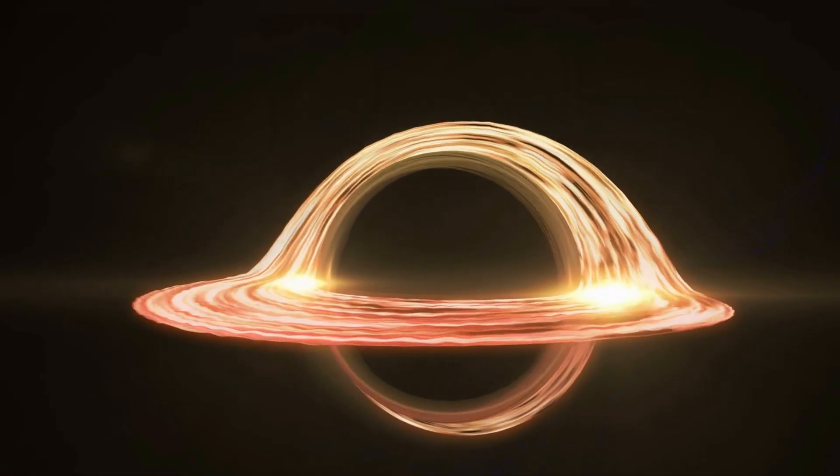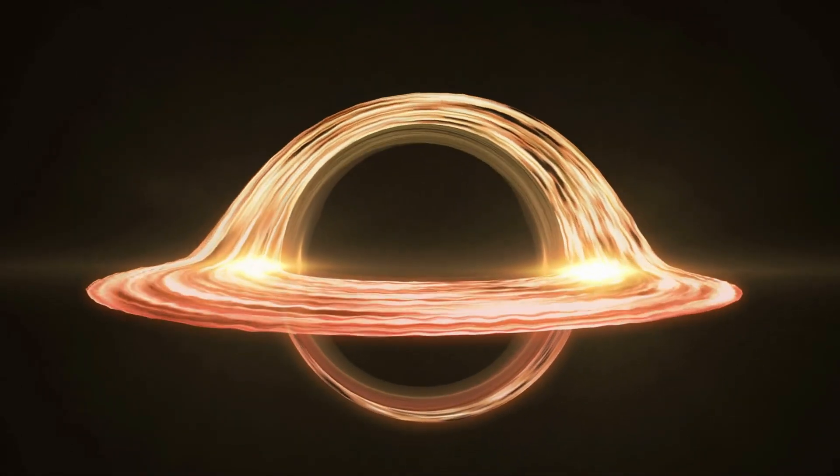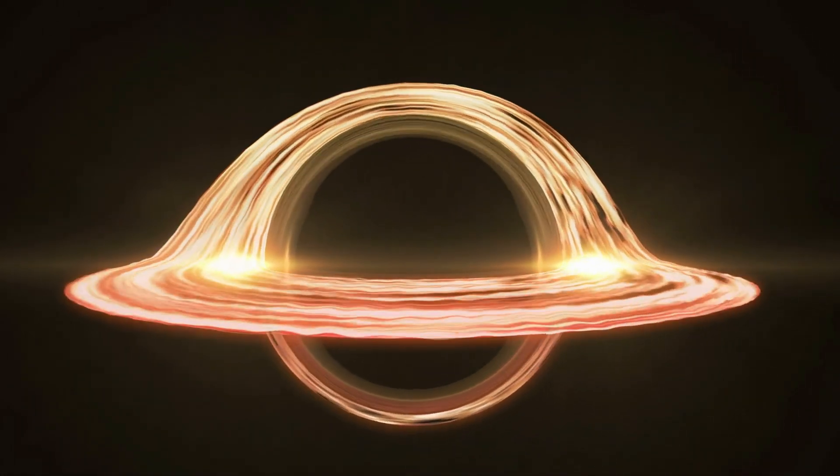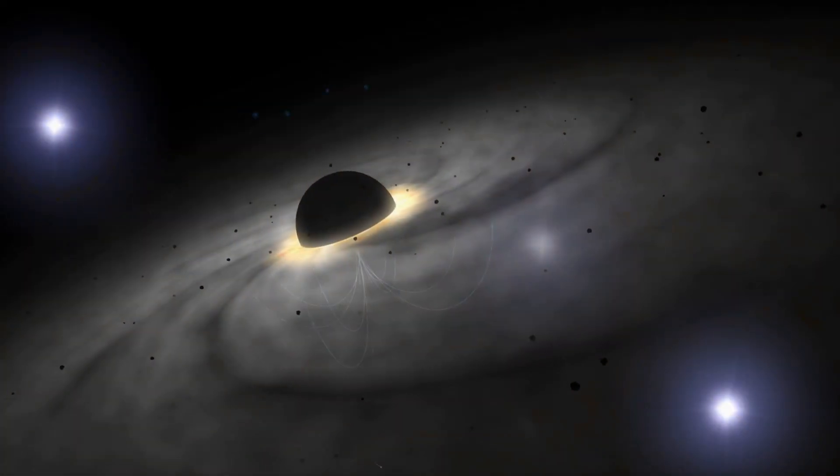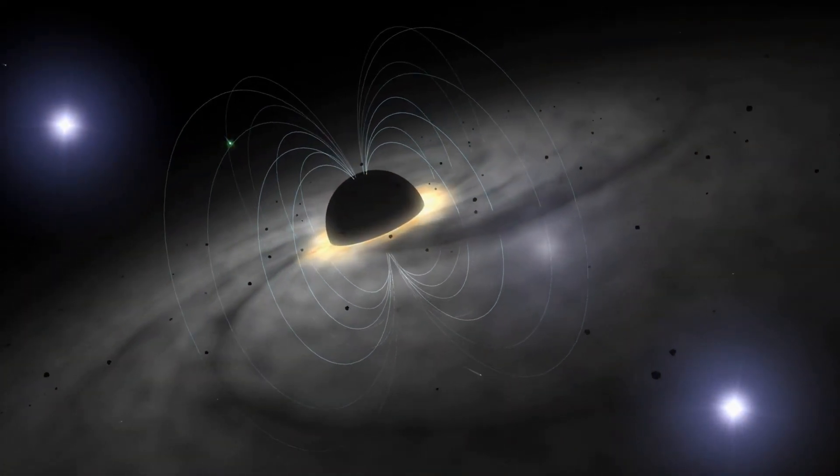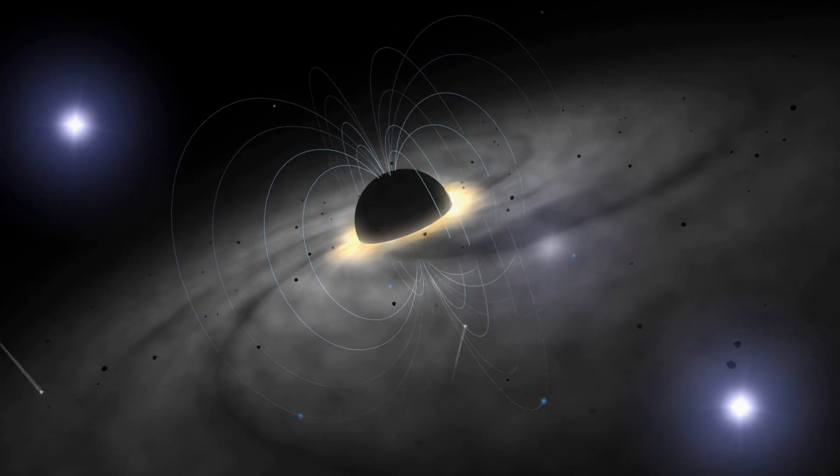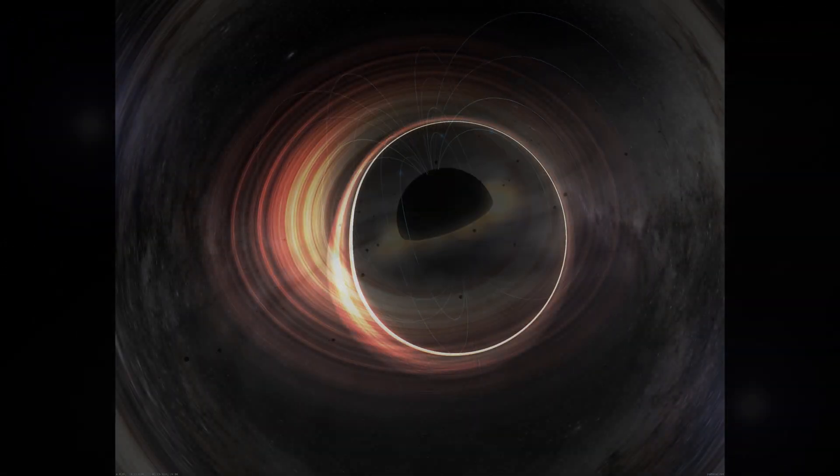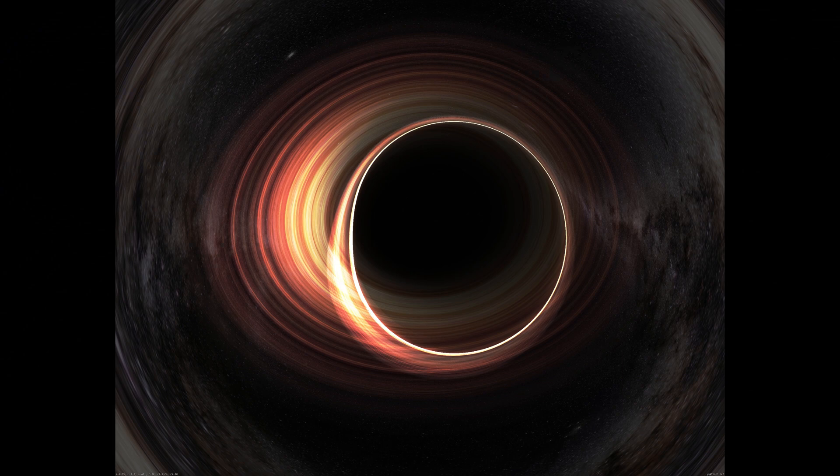The source of energy for these jets had been a mystery, but scientists proposed that they could be powered by the black hole's magnetic fields, provided the black holes were spinning rapidly on their axes. Black holes likely acquired their spin initially during their formation from collapsing stars, much like figure skaters spinning faster by pulling in their arms.